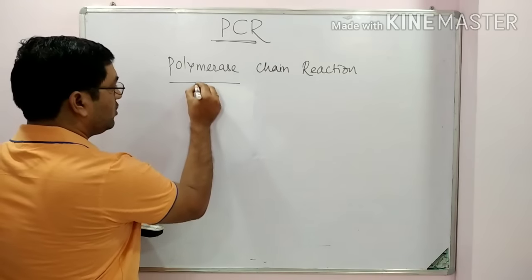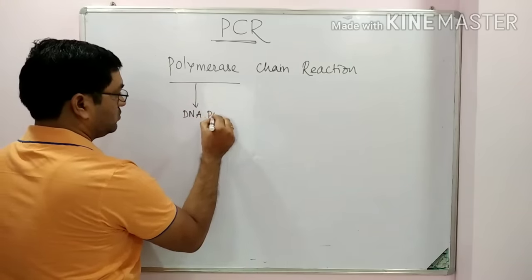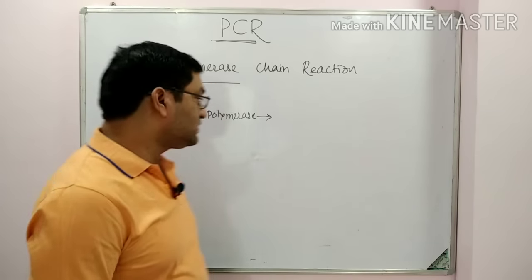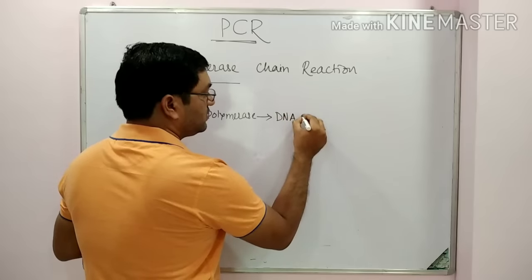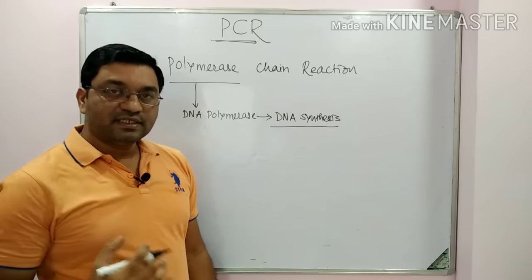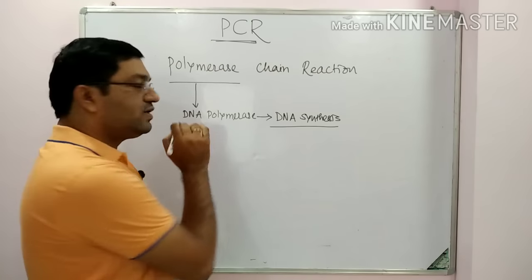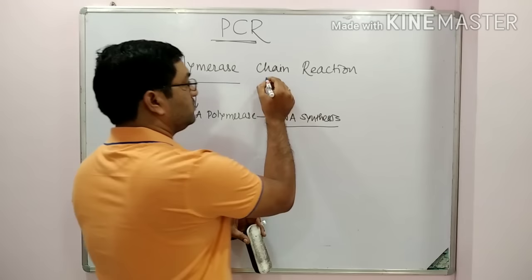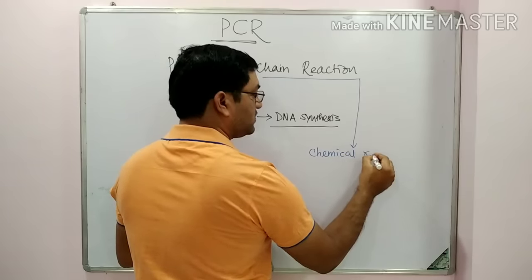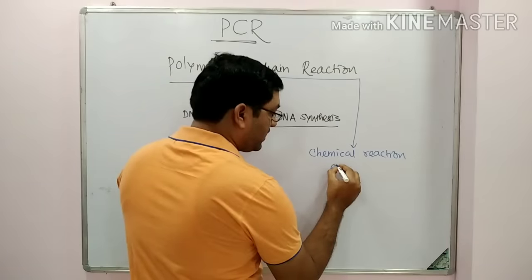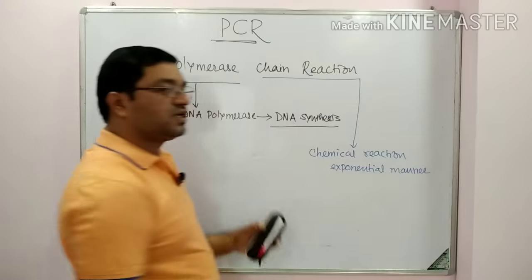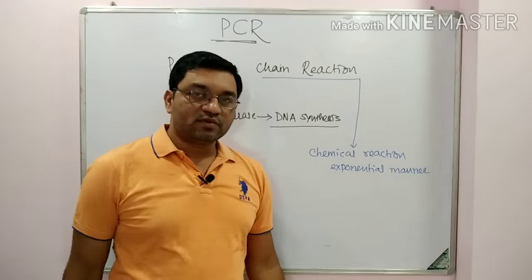Polymerase — it is a DNA polymerase, and it causes extension of nucleotides in DNA synthesis. It is responsible for DNA synthesis. The main function is to add nucleotides to the existing nucleotide primer. That is the role of DNA polymerase. And what is the meaning of chain reaction? It is a chemical reaction which proceeds in an exponential manner to produce a desired product.